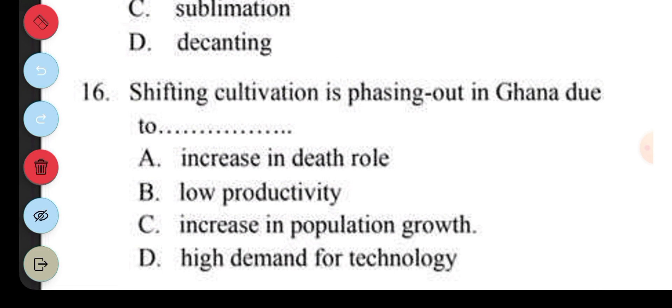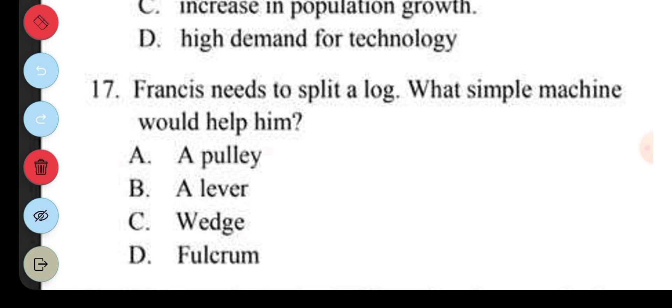Question 16. Shifting cultivation is phasing out in Ghana due to: A. Increase in death rate. B. Low productivity. C. Increase in population growth. D. High demand for technology. The answer to question 16 is C, increase in population growth. Question 17. Francis needs to split a log. What simple machine would help? A. A pulley. B. A lever. C. A wedge. D. A fulcrum. Question 17, the answer is C, wedge.